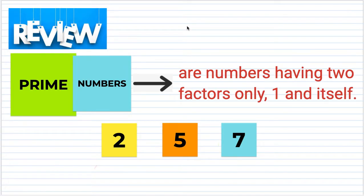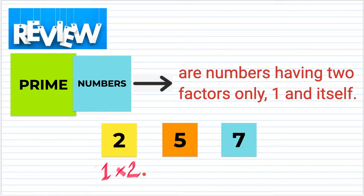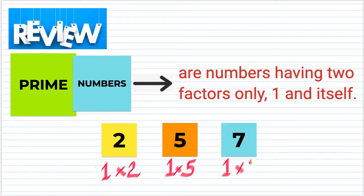When we say prime numbers, these are numbers having two factors only: one and itself. Two is considered a prime number because the only two numbers that when you multiply give you two are one and two itself. Five is also a prime number because the only numbers that can be multiplied to get five are one and five. And seven is also a prime simply because the only two numbers that can be multiplied to get seven are one and seven itself.